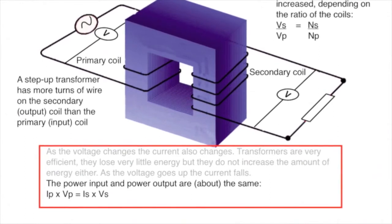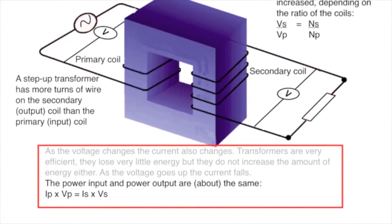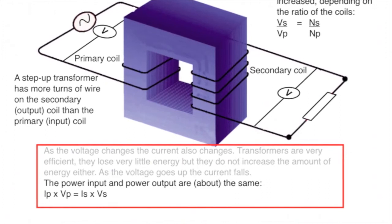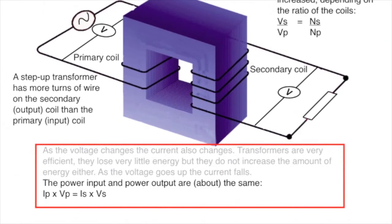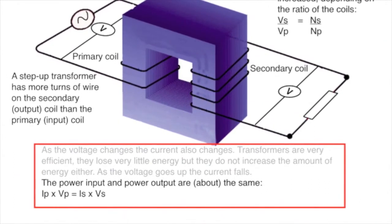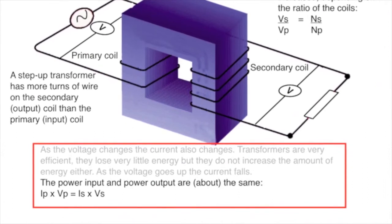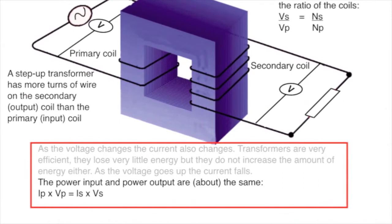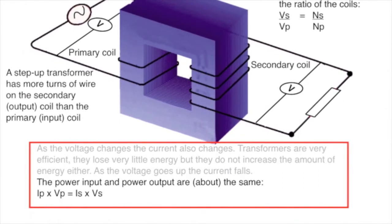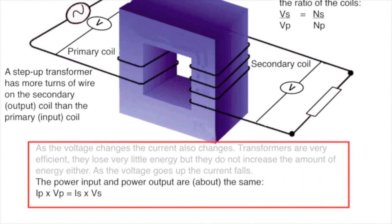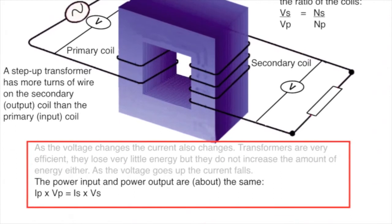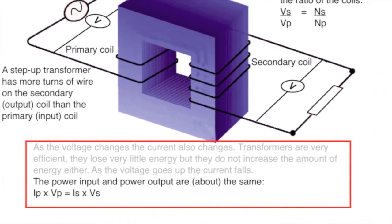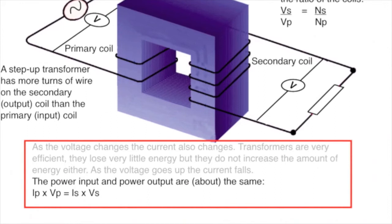Transformers are not perfectly efficient, but they are very efficient, often over ninety-nine percent efficient. A small amount of energy is lost through heating in the coils and heating in the core through magnetic hysteresis. Because of their very high efficiency, broadly speaking, the power input and the power output are the same. That is, the primary current multiplied by the primary voltage is equal to the secondary current times the secondary voltage.